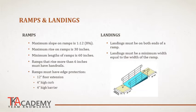Ramps also require landings. You must have a landing on both sides — the top and bottom of the ramp. The minimum length of that landing is 60 inches, and the width of the landing must be at least equal to the width of the ramp. So if your ramp is 48 inches wide, the landings must also be a minimum of 48 inches wide.